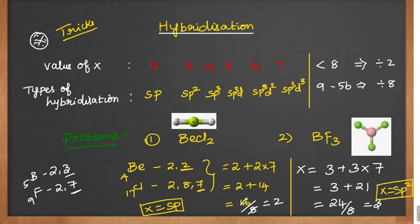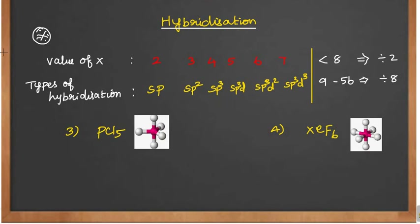So sp2 hybridization. Likewise, we have to find out the hybridization — it is a very simple trick, and you can find it out easily using this method. Let's move to the next problem: phosphorus pentachloride.